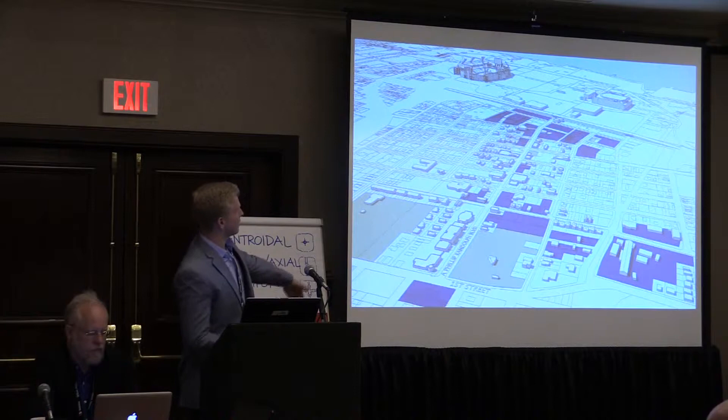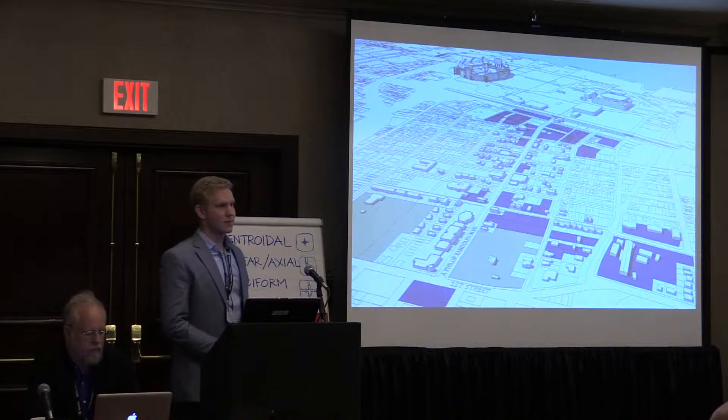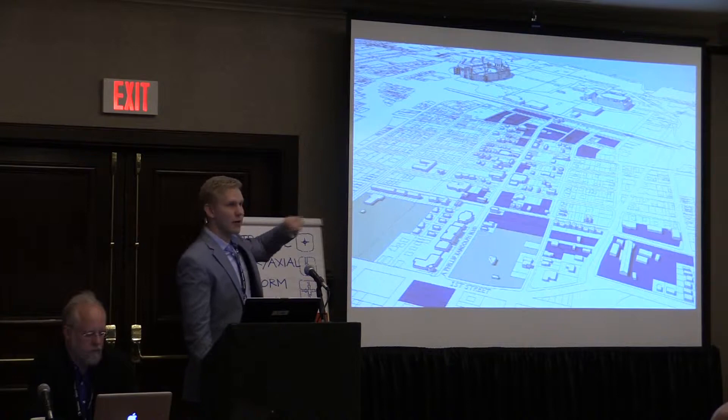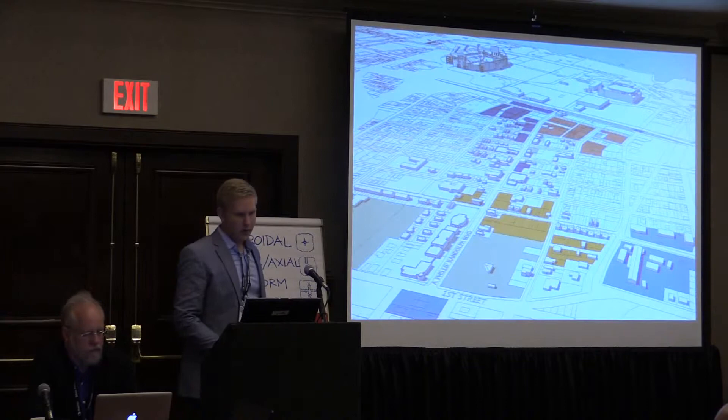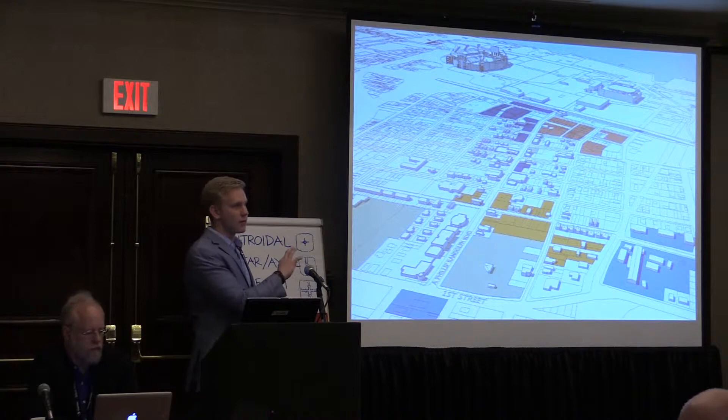This is the corridor that we're mainly studying. Using GIS and a couple of other resources, cruising around on Google Street View, we've identified vacant parcels and parcels that we thought were prime for development, and we highlighted those in blue. We then group them by character, ownership, and different areas.